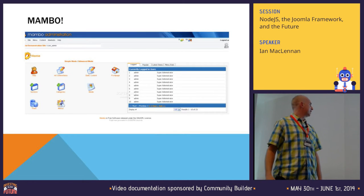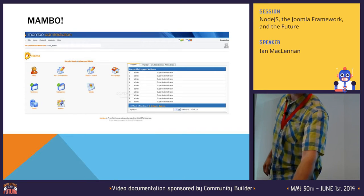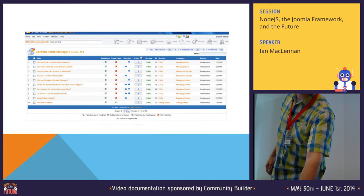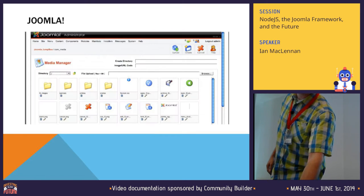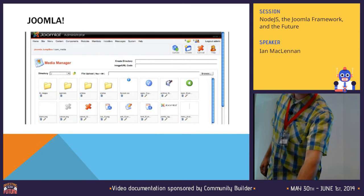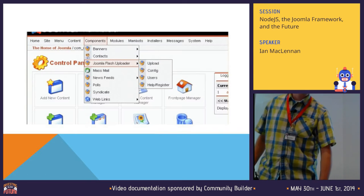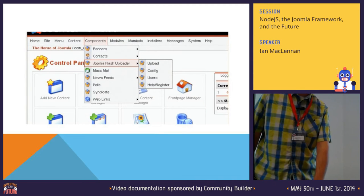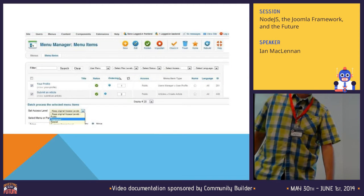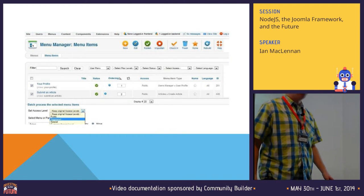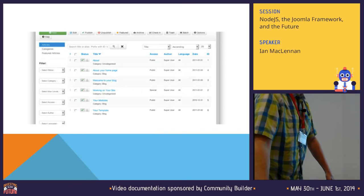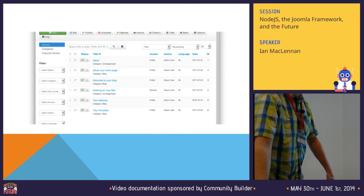So we have Mambo back in the day, then Joomla 1.0 rolls around. Your drop-down menu is there with the Joomla flash uploader — I think that's 2.5. And this is version 3.